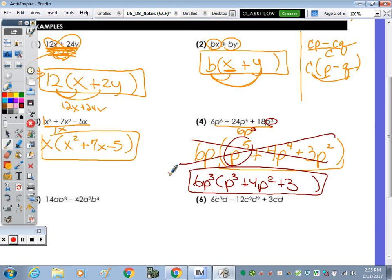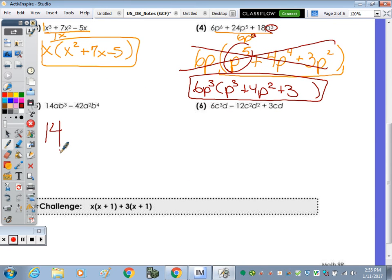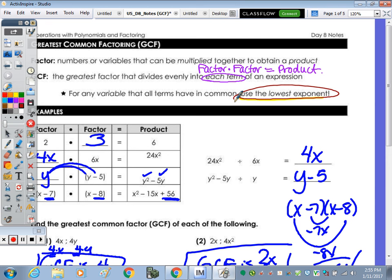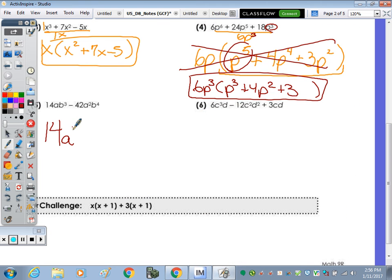So now that we know that, what's the GCF for 14ab cubed and 42a squared b to the 4th? 14 is right, Jack, numerically, but what about for the variables? If you look at a and a squared, a's the smallest, what about for b cubed and b4? Going back to the front, it was your variable part with the lowest exponent, which would be the 3. So it's going to be b cubed. Divide this by 14ab cubed. Well, what is 14ab cubed divided by 14ab cubed? 1. 42 over 14 is 3. a squared divided by a is going to be a. And then b to the 4th divided by b cubed is b.